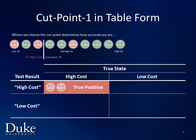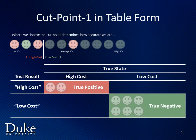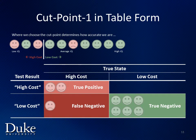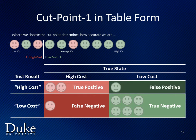If the test correctly identifies an individual as high cost, this is a true positive. With the first cut point, we have two true positives. If the test correctly identifies an individual as low cost, this is a true negative. With the first cut point, we have six true negatives. If the test incorrectly identifies an individual as low cost, this is a false negative. With the first cut point, we have one false negative. Finally, if the test incorrectly identifies an individual as high cost, this is a false positive. With the first cut point, we have one false positive.